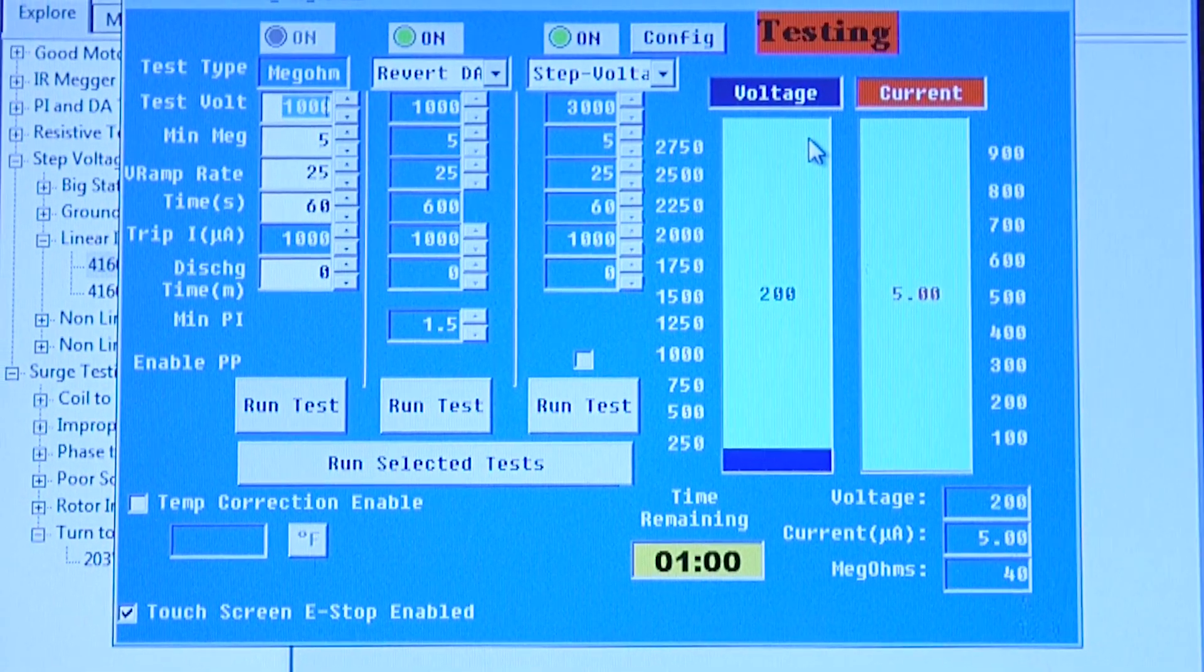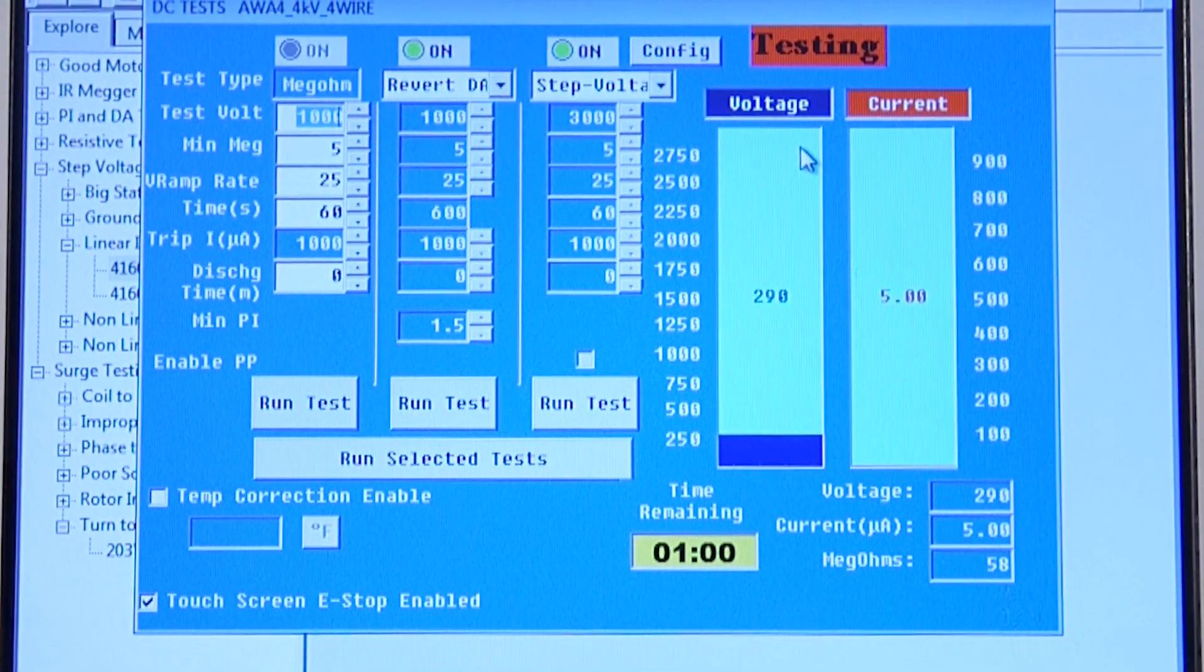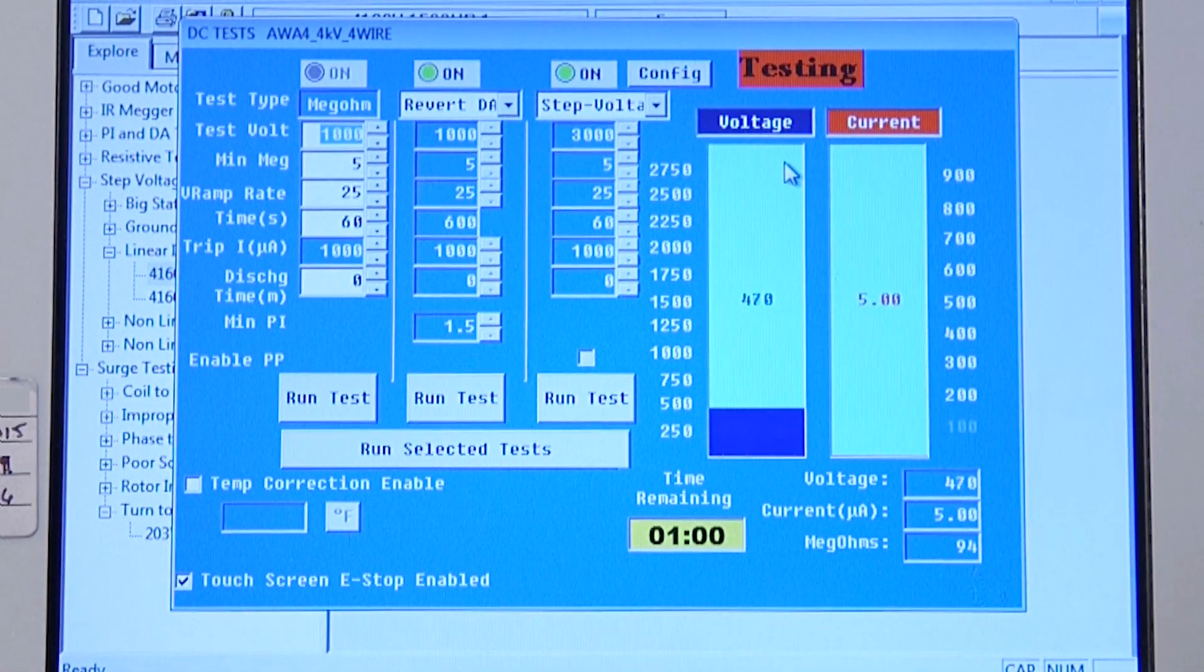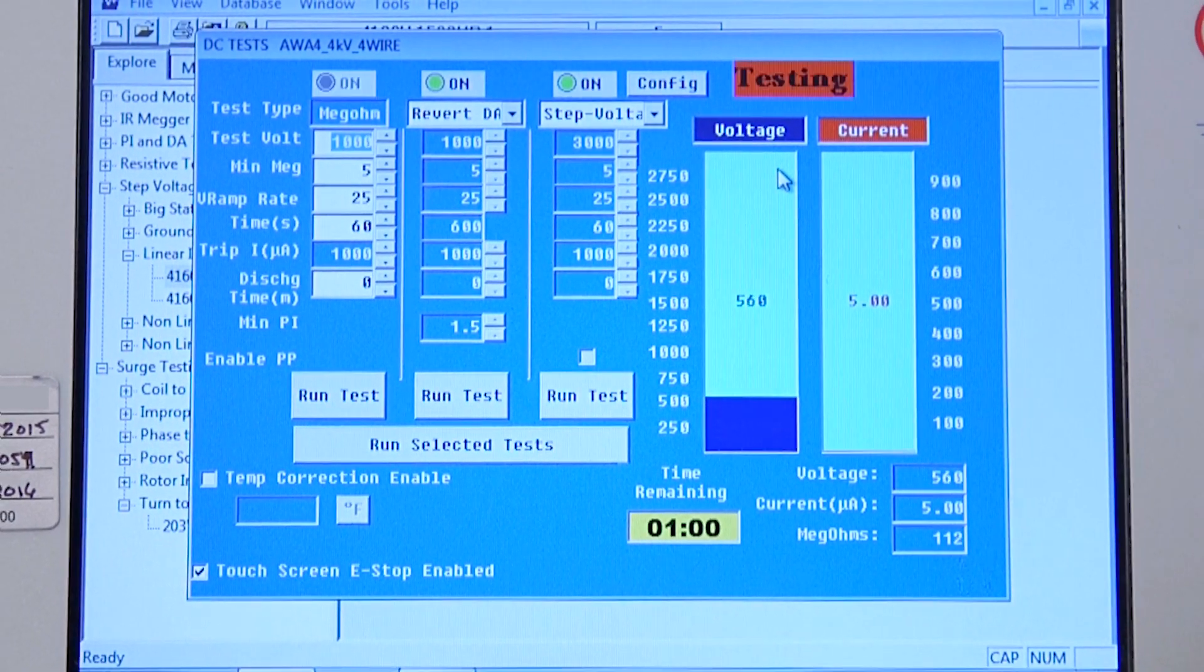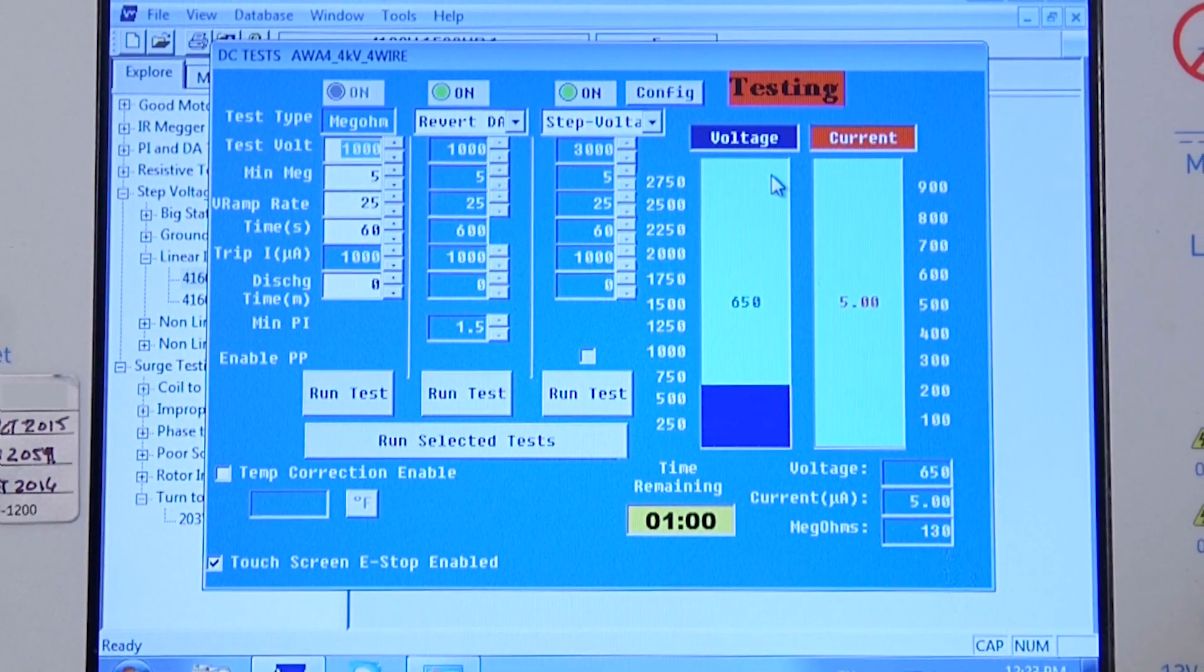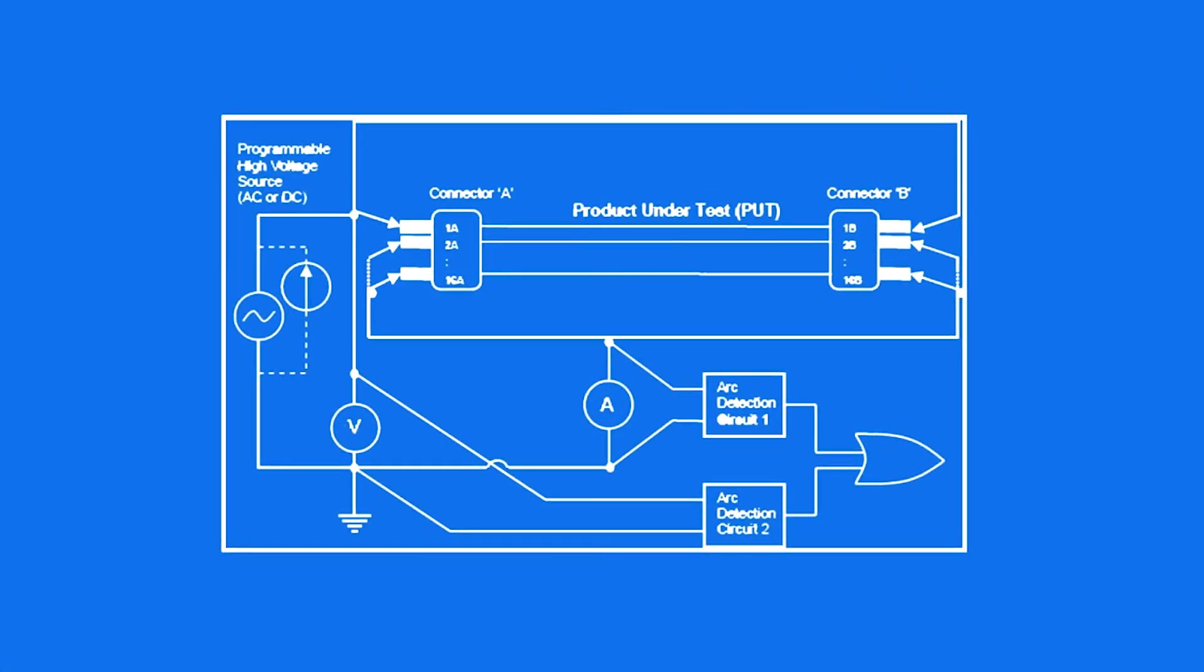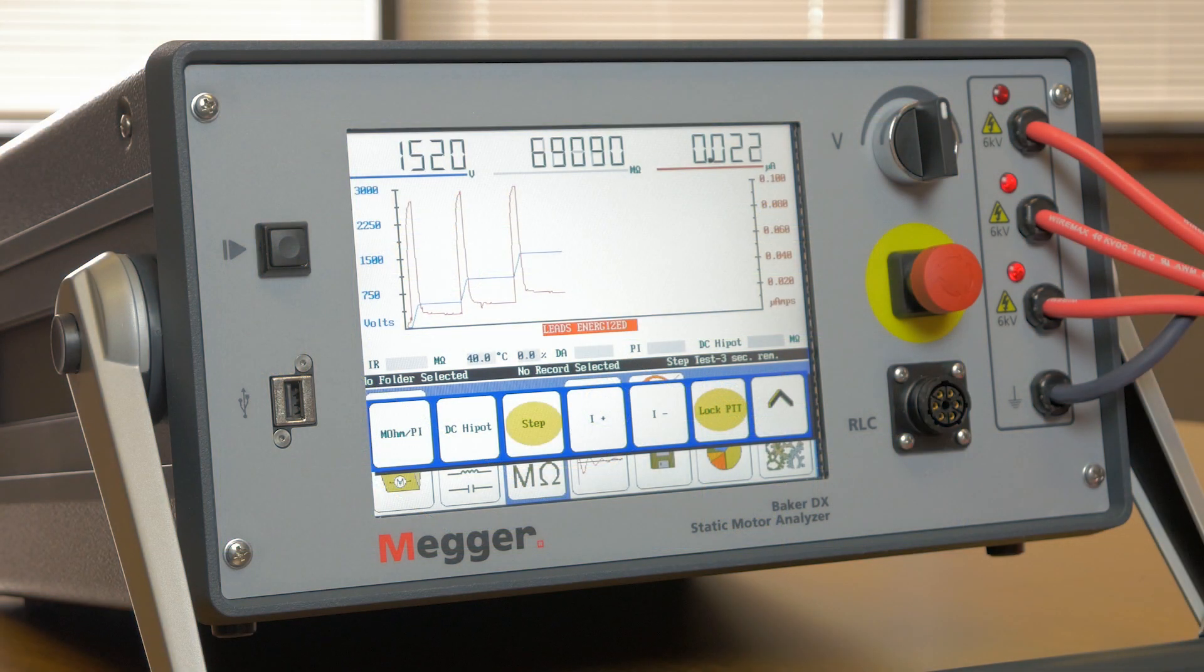A mega-test or mega-ohm test typically tests the ground-wall insulation at or below the motor operating voltage. This has limited value as insulation breaks down non-linearly as the voltage increases. A high-pot test is a DC ground-wall insulation test but run at higher voltage. This covers the peak voltages a motor would normally see with some level of margin.